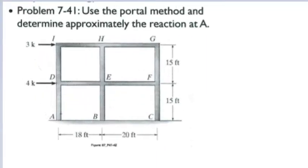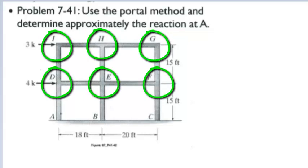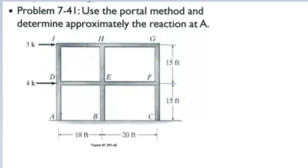In this example, we will use the portal method to solve the reactions at support A of the two-story moment frame. Supports A, B, and C are fixed, and all the joints in the frame are fixed connections. The portal method is an approximate method to solve the statically indeterminate moment frame by making assumptions of lateral load distribution in the columns in order to reduce the moment frame to a statically determinate structure.